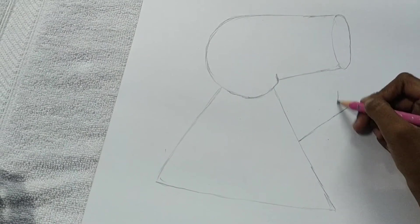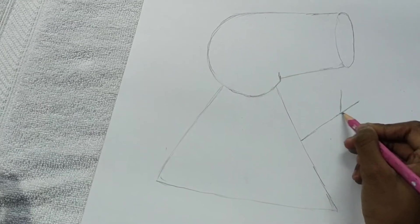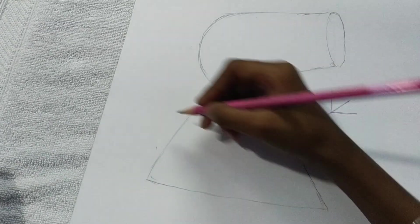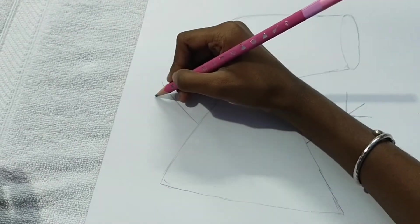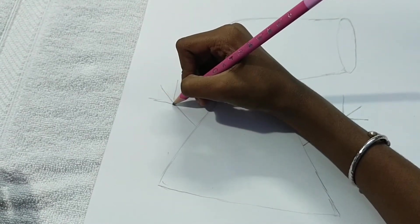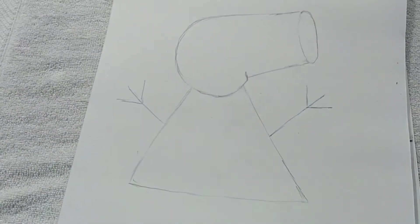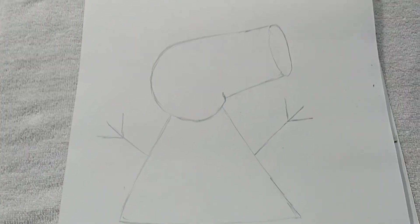And then I draw two lines from this and then one long line from this same line. Okay, these are the two hands of the pig.